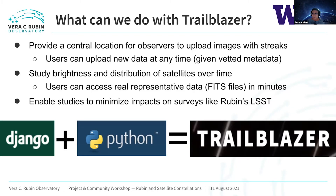With Trailblazer, we collect images with satellite streaks and provide a place for people to study the brightness, distribution, and changes of satellites over time. We hope Trailblazer can reduce the impact on surveys like Rubin's LSST. What we use to make Trailblazer is Python plus Django — Django is a Python framework that allows us to do local offline testing of the website before we launch it.